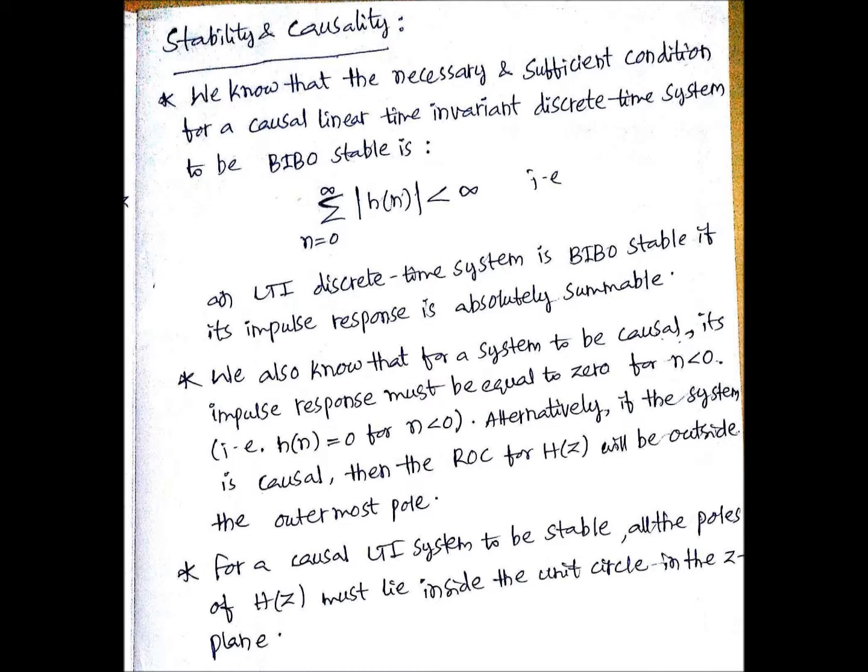These are the three different conditions: first one is for only BIBO stable, second one is for causal, third one is causal and BIBO stable. That is what you need to understand from this lecture. Thank you.